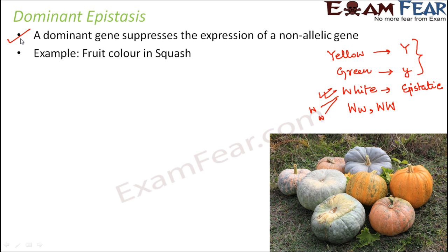Since this is dominant epistasis, whenever white is present in the dominant condition — that is capital W small w (heterozygous dominant) or capital W capital W (homozygous dominant) — white shows its epistatic effect and stops the phenotypic expression of yellow and green, making the fruit color white. Therefore white is a dominant epistatic gene. But if white is present in homozygous recessive condition (small w small w), it will not show its epistatic effect.